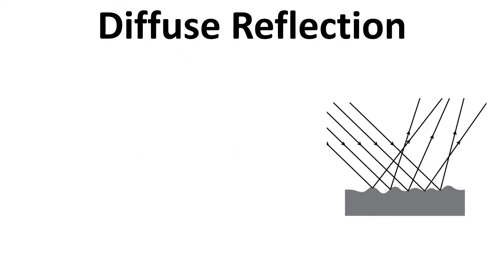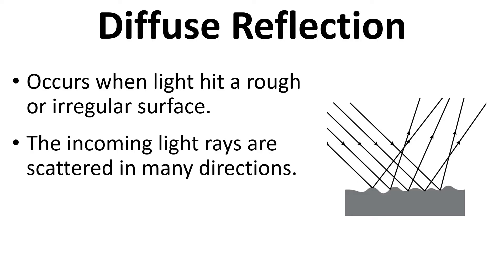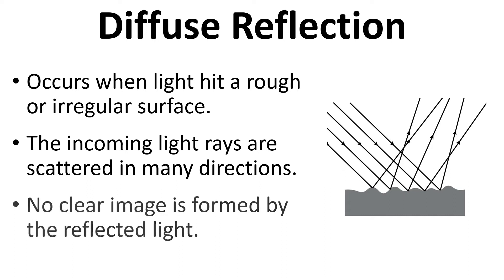In contrast, diffuse reflection occurs when light hits a rough or irregular surface. The incoming light rays are scattered in many directions and there's no clear image formation when the light is reflected.